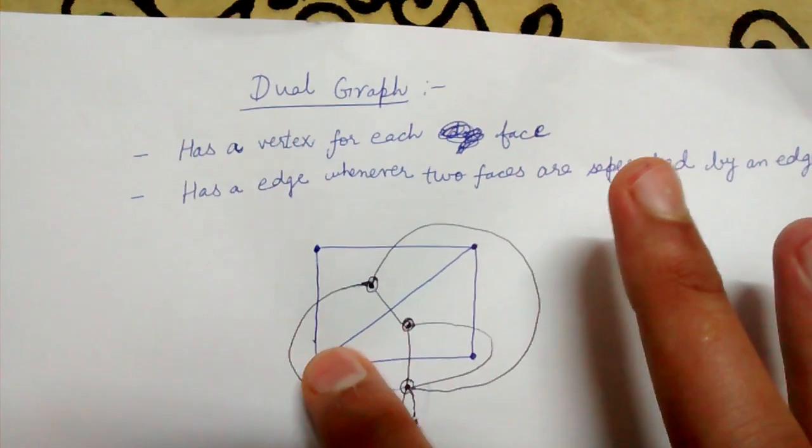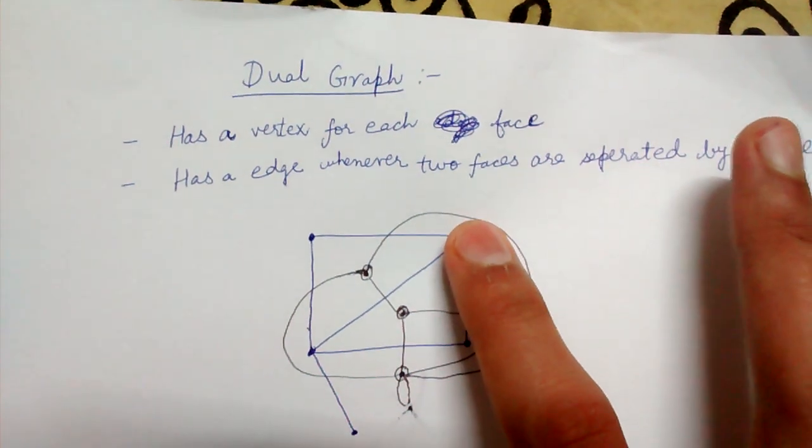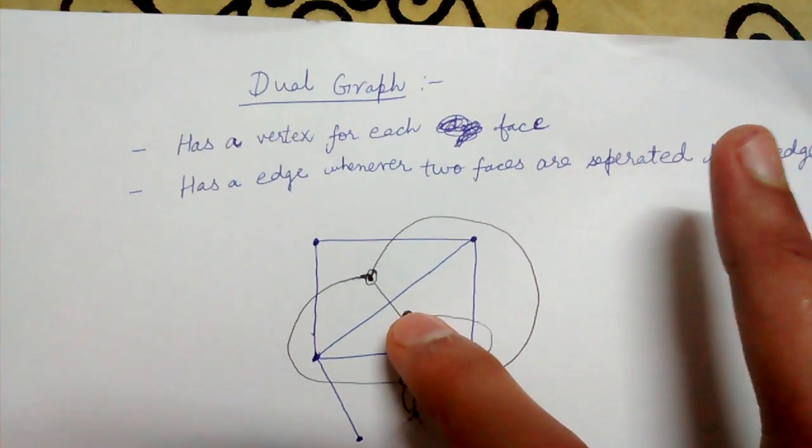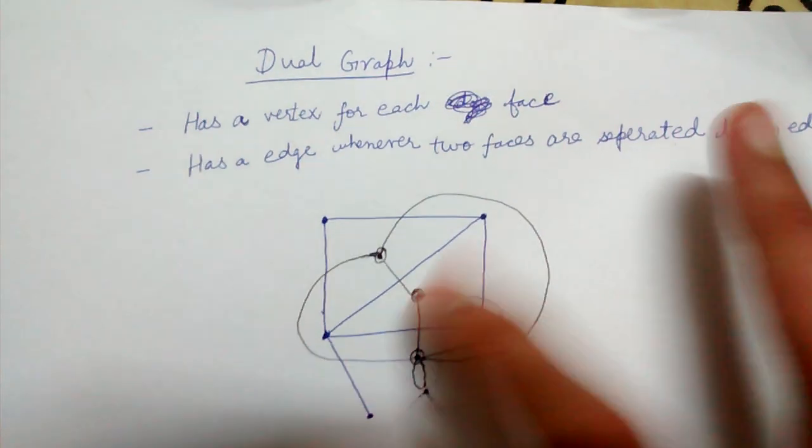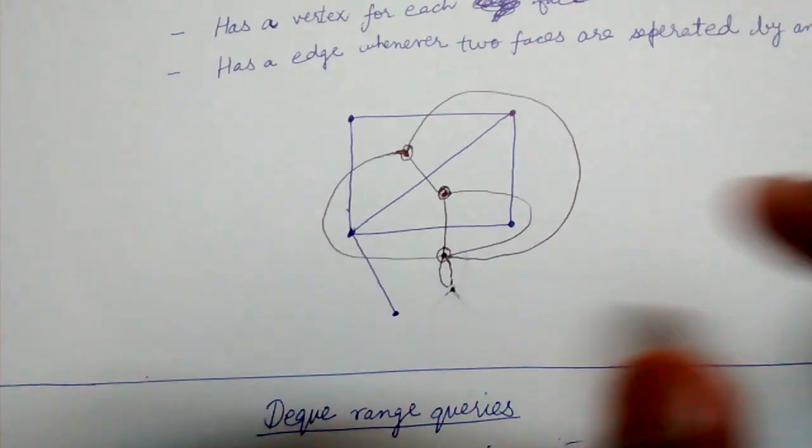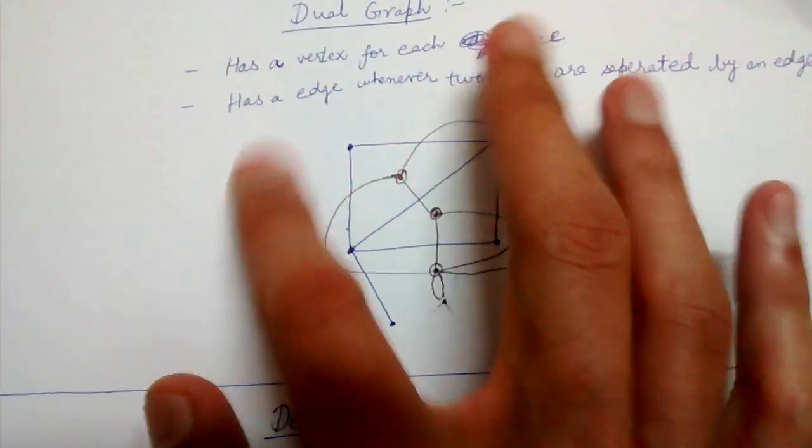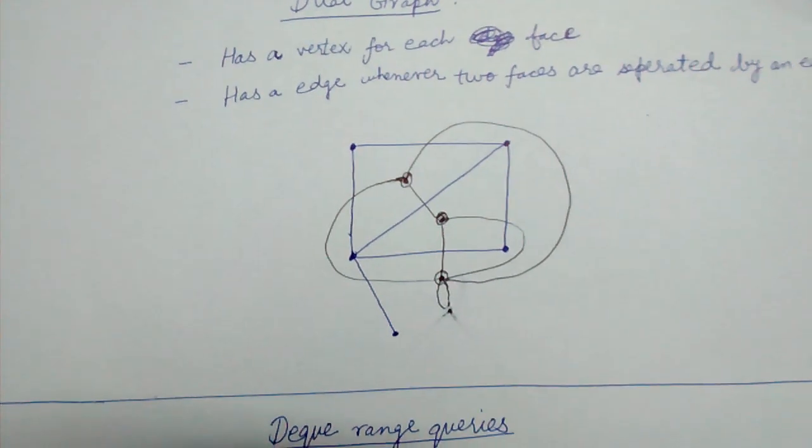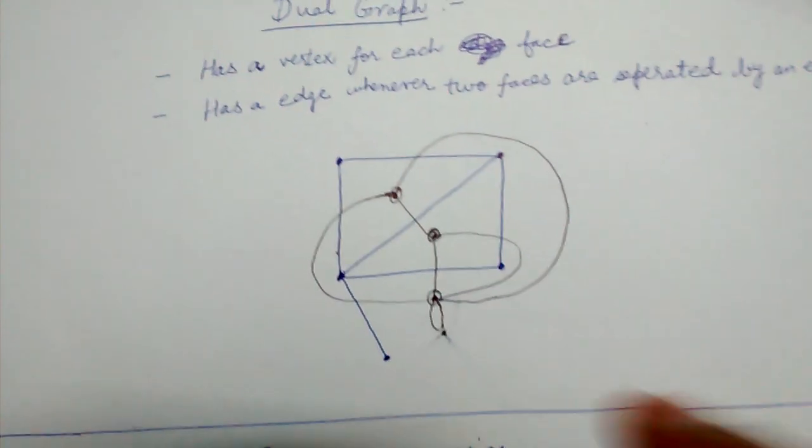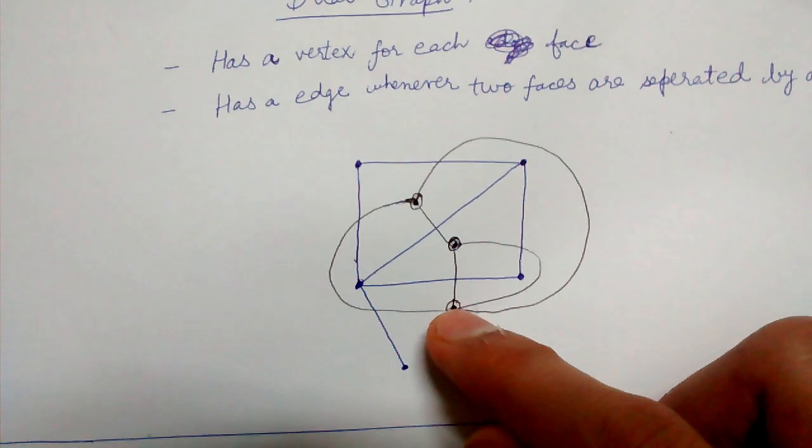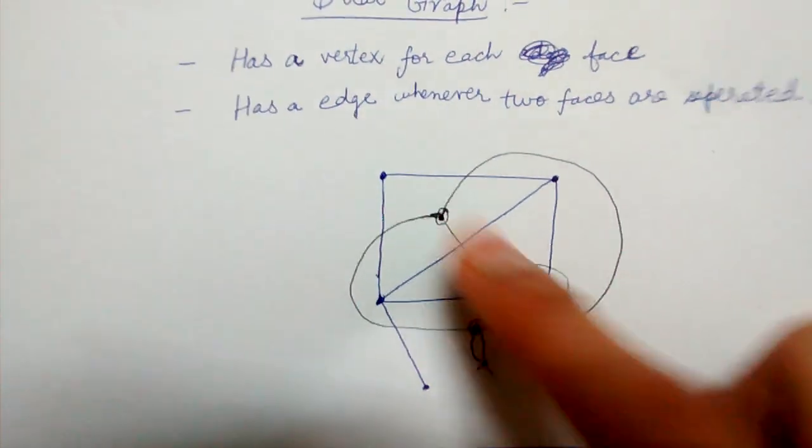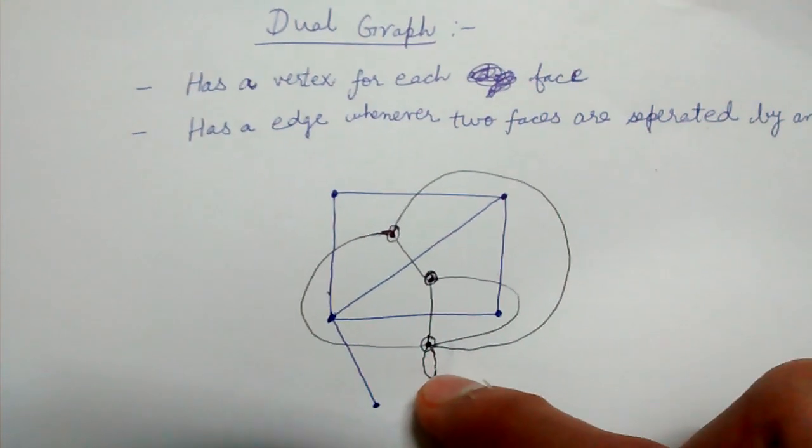For this particular face of the graph we have created this and the remaining face extends till infinity. So this is that vertex corresponding to it. So we get three vertices in this way.